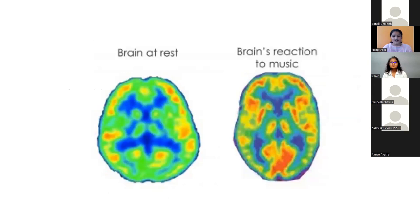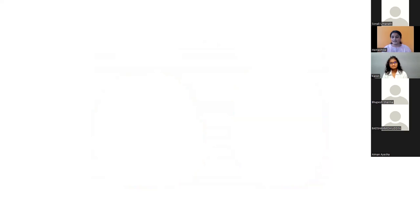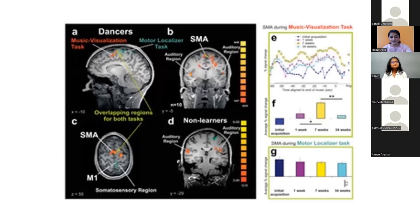This is an MRI scan of the brain at rest and with its reaction to music. At rest you see more neutral colors — blue and green — showing there isn't much neural activity. But when you're listening to music, many parts of the brain fire up, which is why you see heat signals in red, orange, and yellow. This is a comparison between the brains of dancers and non-dancers — you can see that certain regions like the auditory region, the music visualization task region, and the motor localizer task region are more developed in dancers, which is why they perform other tasks better than non-dancers.